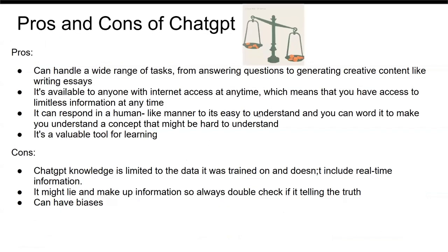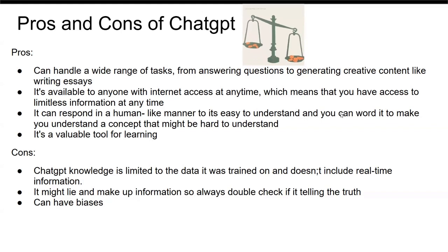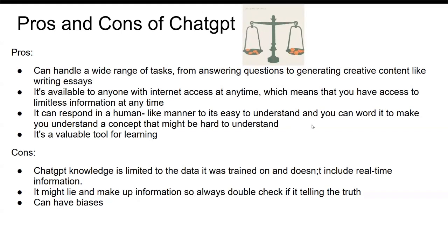The pros of ChatGPT: it can handle a wide range of tasks, from answering questions to generating creative content like writing essays. It's available to anyone with internet access at any time, which means you can have access to limitless information. It can respond in a human-like manner, making it easy to understand, and you can word things to make it explain a concept that might be hard to grasp.